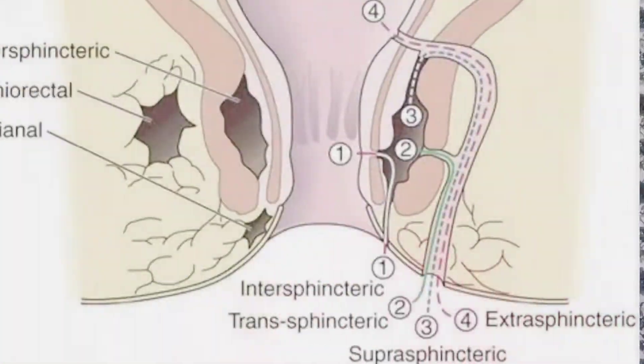Now let's discuss about the types of anal fistula. The first one is extra-sphincteric, which begins at the rectum or sigmoid colon and opens into the skin of the anal area — so it is above the sphincter. The next variety is trans-sphincteric, which begins between the internal and the external sphincter, crosses the external sphincter muscle, and opens into the skin.